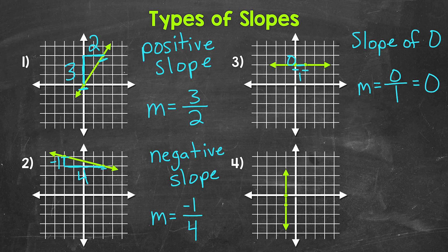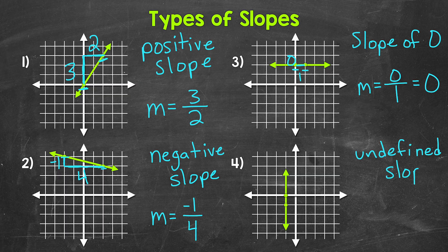Lastly, moving on to number four, we have a vertical line. There's vertical change, but no horizontal change here — no movement left or right at all. The Y values are changing, but the X values stay the same. This is what we call an undefined slope. Let's look at our two points. Starting at the bottom point and working up to the top point — as far as our rise, we move up one unit, so the rise is one.